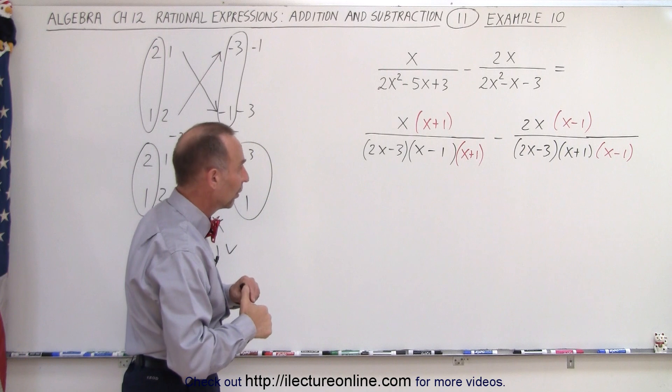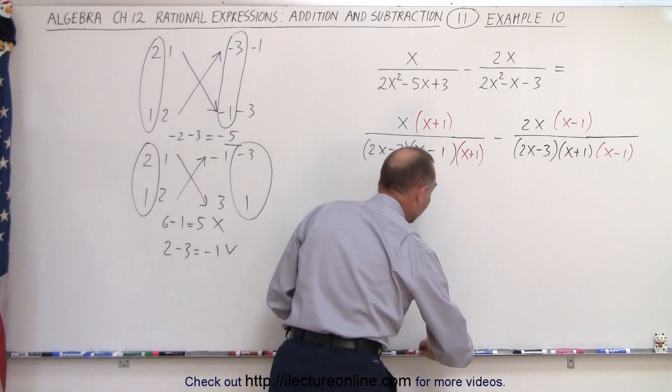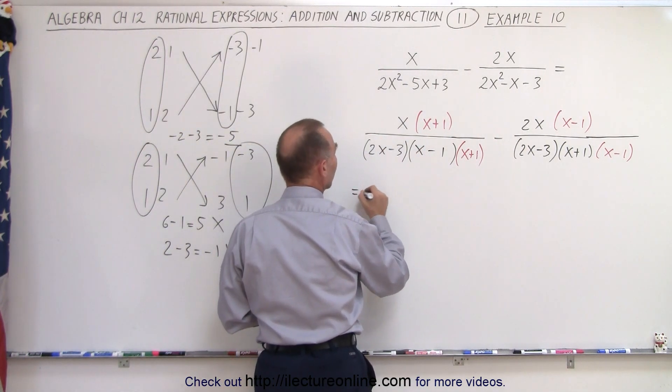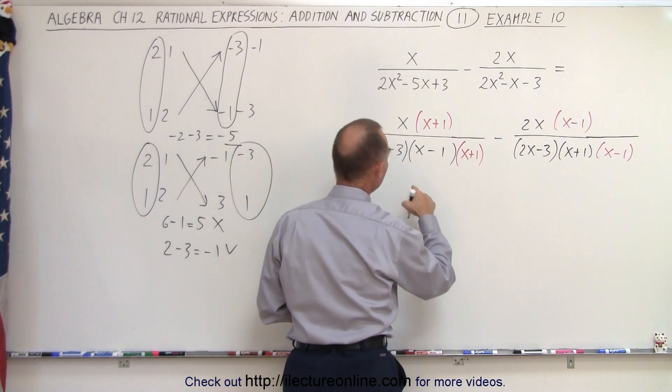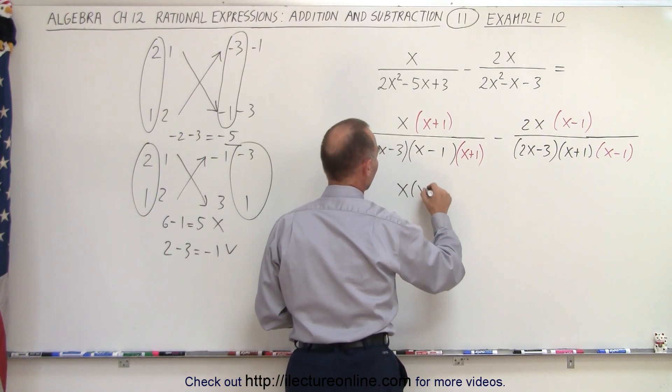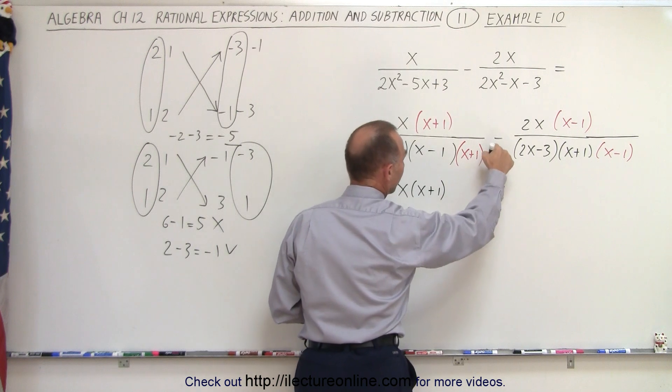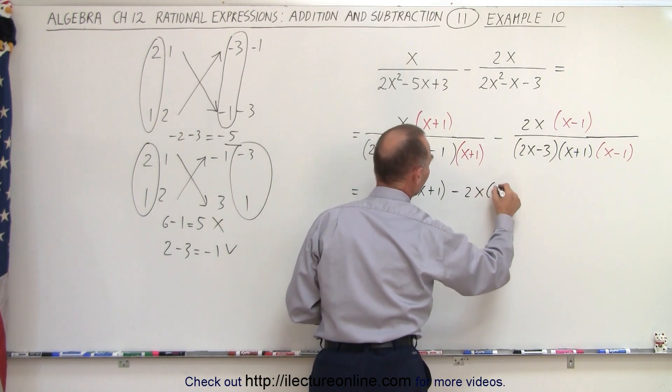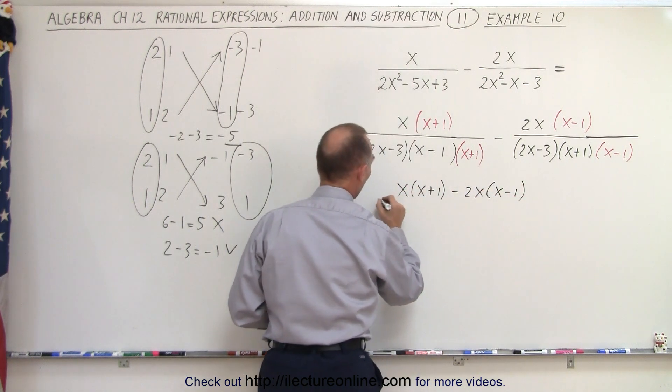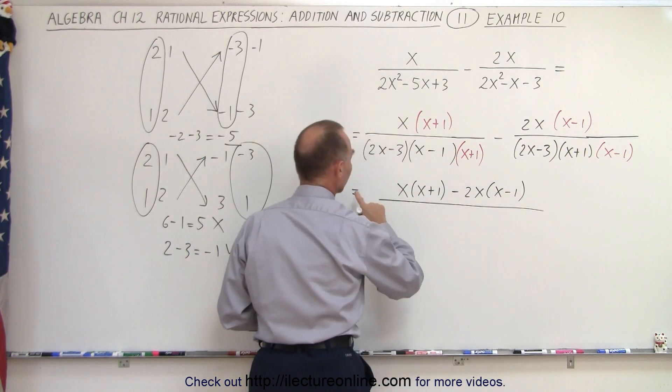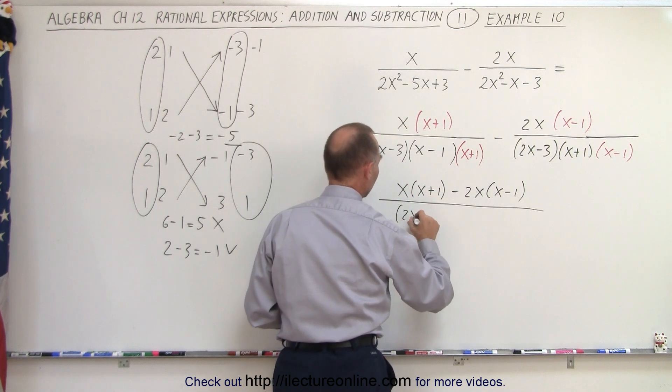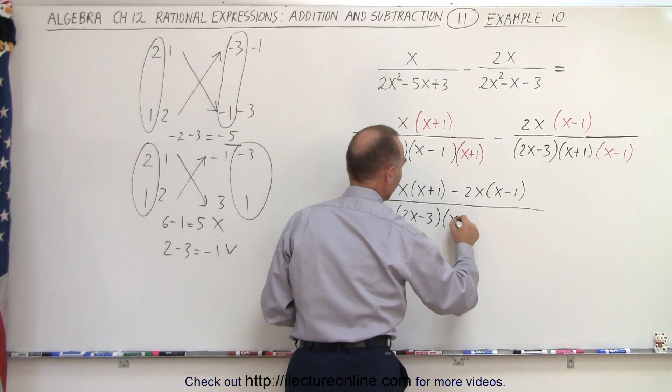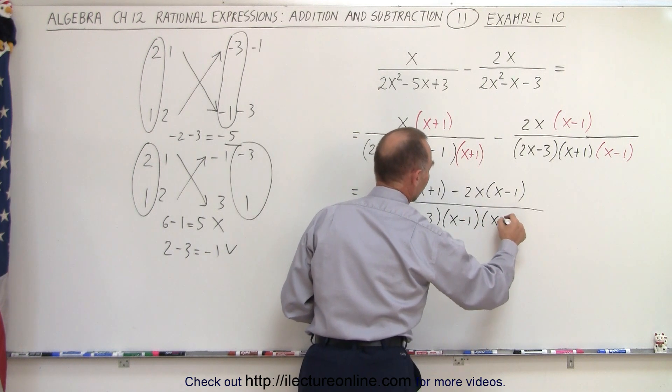We can write the difference of the two numerators over the same common denominator. So this can be written as x times x plus 1 minus 2x times x minus 1, all divided by the same common denominator, 2x minus 3, x minus 1, x plus 1.